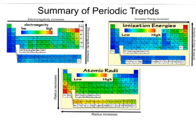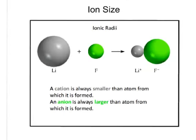One more item to note: ionic radii and the size of ions. A cation, if you'll remember, is the positively charged ion — one or more electrons have been removed to make it positive. An anion is the negatively charged ion — it has one or more additional electrons added to it. A cation is always smaller than its parent atom. Here we have the parent atom of lithium and its cation — an electron has been removed, so it is a smaller ion. For an anion it's the opposite: an anion is always larger than the atom from which it was formed. Here we have the fluorine atom and the fluorine ion — an electron was added to it, and it has increased in size as a result.